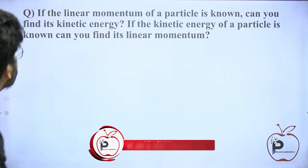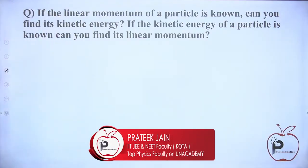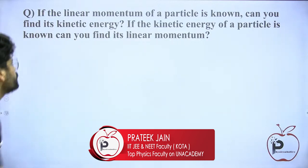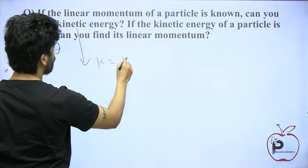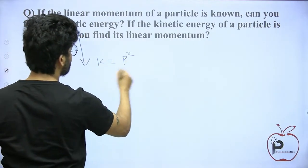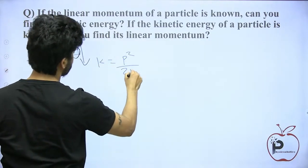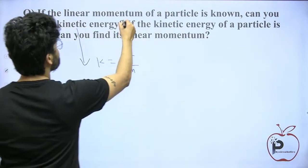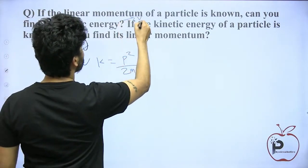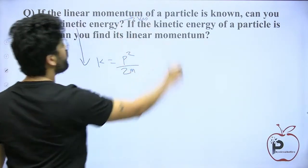If the linear momentum of a particle is known, can you find its kinetic energy? Yes. Kinetic energy equals p squared by 2m, where p is the magnitude of momentum. So the answer is yes, we can.